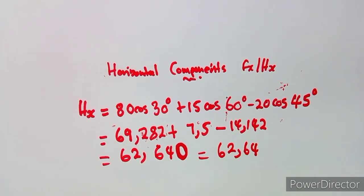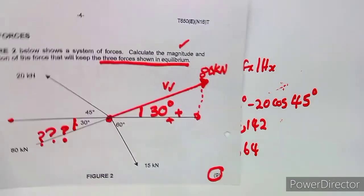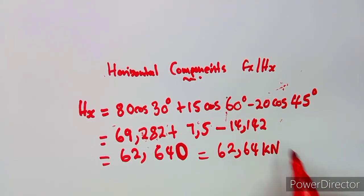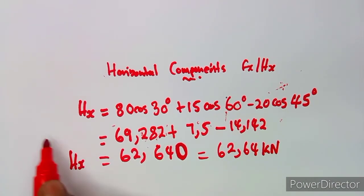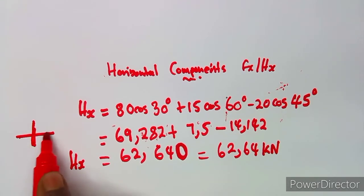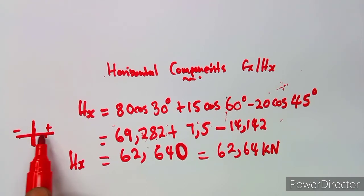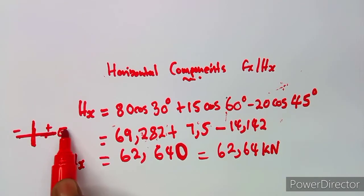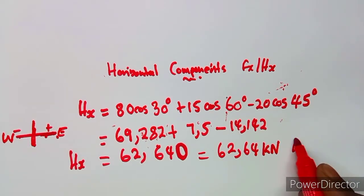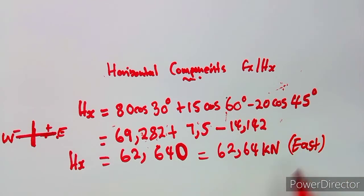All these forces were in kilonewtons, so the horizontal component is 62.64 kilonewtons. Looking at the horizontal axis — positive is to the East and negative is to the West — since our result is positive, it means the direction is East.